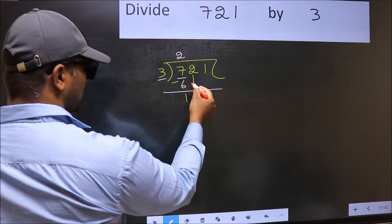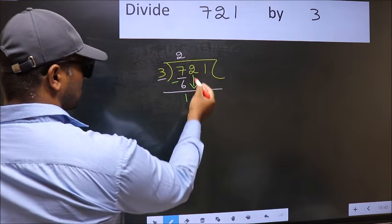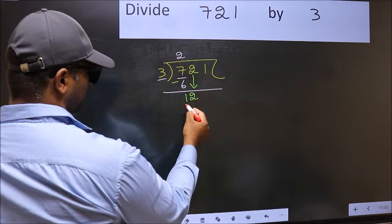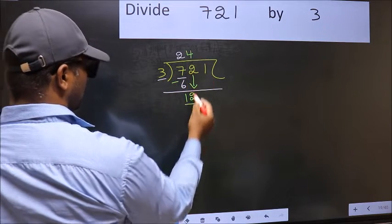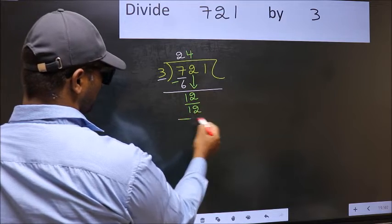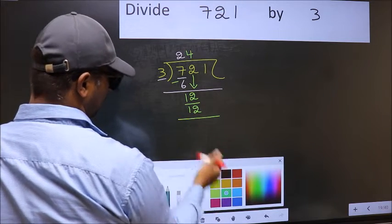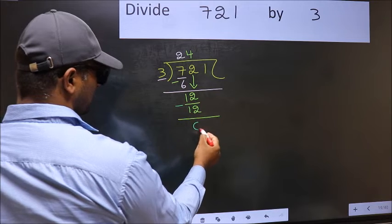After this, bring down the beside number. So 2 down. Now 12. When do we get 12 in 3 table? 3 fourths, 12. Now you should subtract 12 minus 12, 0.